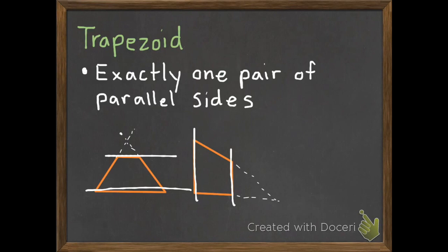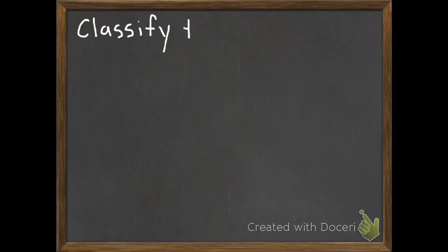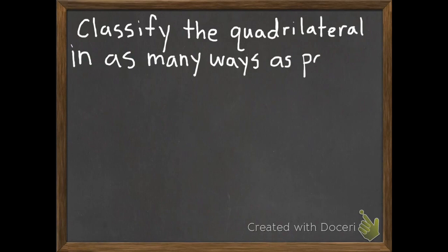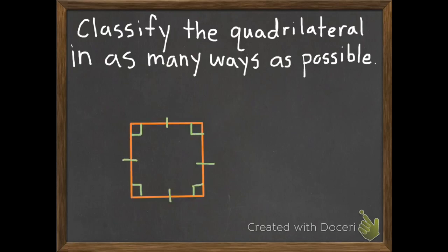Now that we have all that, we can do some questions. We're going to classify each quadrilateral in as many ways as possible — some of these shapes can be more than one kind. Here is our first quadrilateral. Going down in order: first, parallelogram — opposite sides are equal in length, opposite sides are parallel, and opposite angles are the same. So this can be a parallelogram.